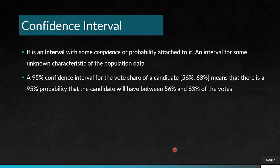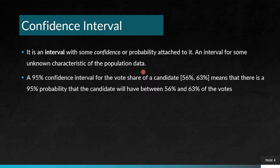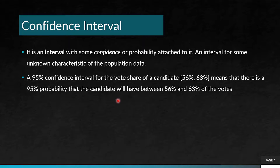Confidence interval: it is an interval with some confidence or probability attached to it — an interval for some unknown characteristic of the population data. For example, a 95% confidence interval for the vote share of a candidate, (56%, 63%), means that there is a 95% probability that the candidate will have between 56% and 63% of the votes.